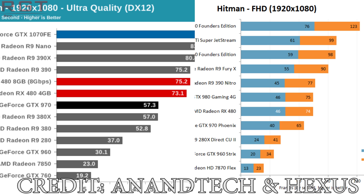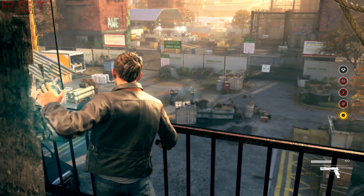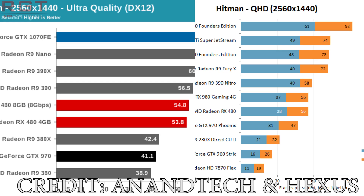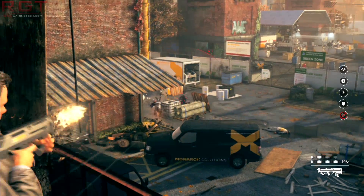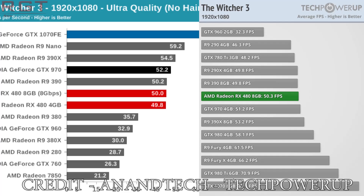Do I think the RX 480 was overhyped? No. I actually think this is one of those cards where it performed roughly at the levels we'd expect. Some individuals were expecting it to beat the Fury X at stock, but that was never going to happen. I think when the custom coolers arrive and people start creating water blocks, the GPU could potentially clock to insane levels and possibly rival the Fury and Fury X. But for the price point of around $230 US, this GPU is a steal — especially if you're coming from an older GPU and coupling it with an i5 or FX processor, giving you a system capable of 1080p without a problem, and even up to 1440p without too much effort.